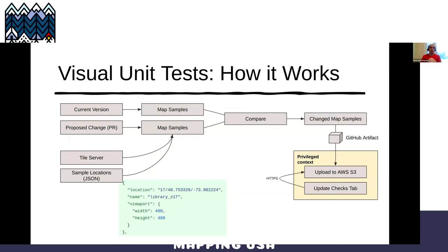How this works: we have our tile server, and a file with a bunch of sample locations — we've defined the zoom, latitude, longitude, a name, and pixel dimensions. We have a long file of all these different possible locations. The GitHub action takes the current version, runs it, runs a little web server, and then does the same thing with the PR — generating two folders of map samples, comparing them, finding the ones that are different, packaging them up, publishing to AWS, and updating the check tab to show the ones that are different.